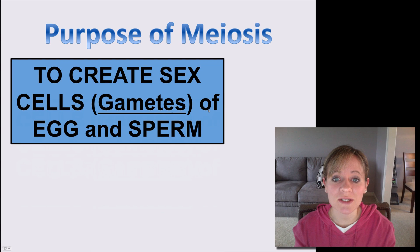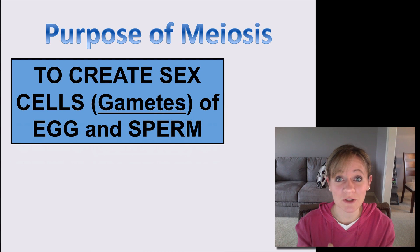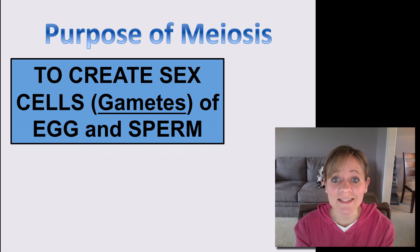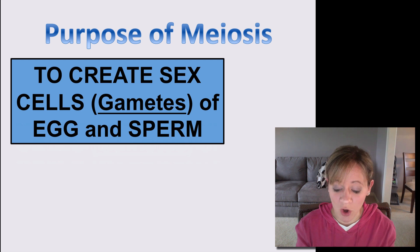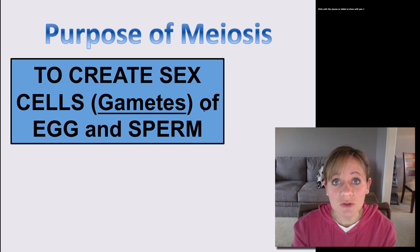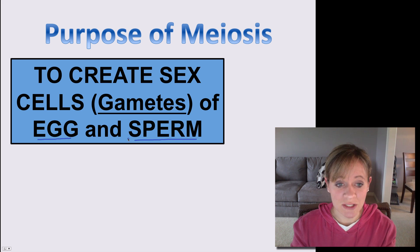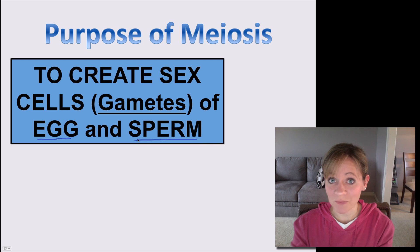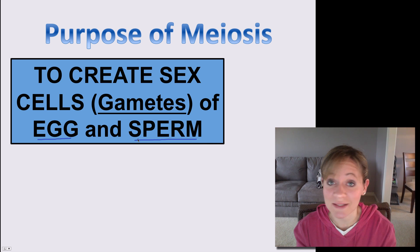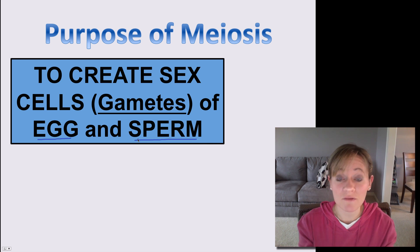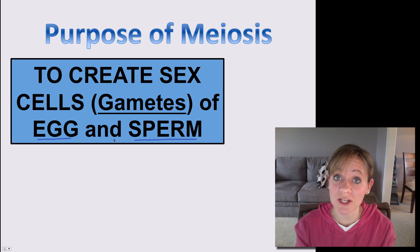The purpose of meiosis — and I have this in big letters because it's so important to remember throughout this lesson — is that it creates the sex cells, which we call gametes. The two types of gametes are egg in females and sperm in males. Meiosis produces the egg and it produces the sperm. It does not produce the baby. It produces the egg and the sperm, which then come together to produce the baby.